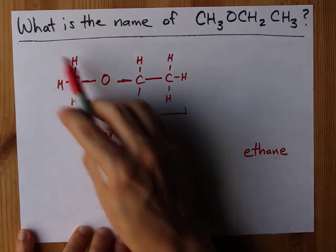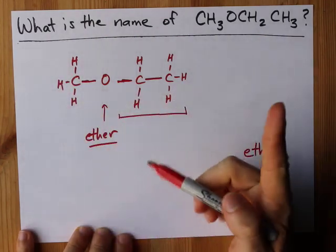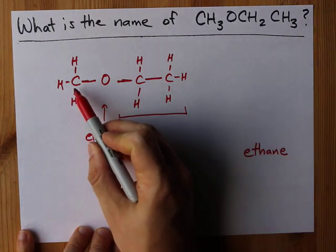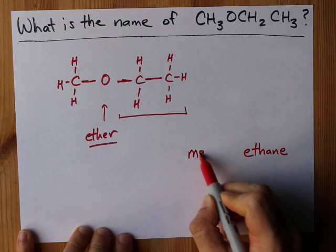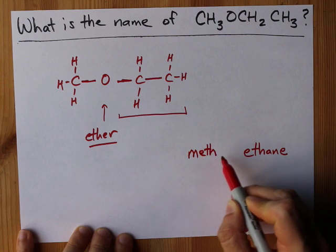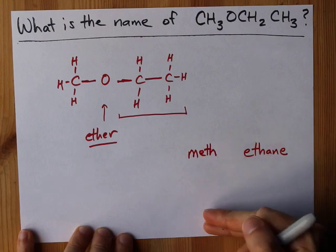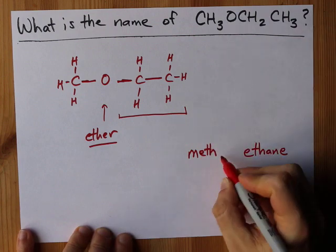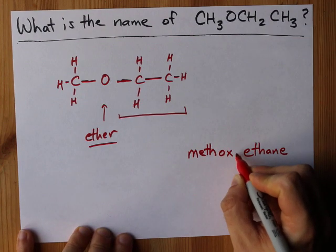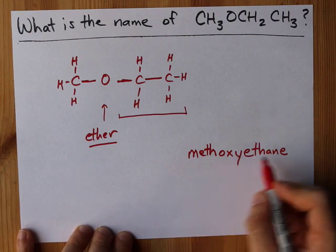And then you have a methyl group, methyl being short for one carbon, and it is connected to the chain via an oxygen. We're going to use the meth from methyl, but instead of YL, meaning that the methyl would have been a substituent, we have to show that it's connected via the oxygen, and so it becomes methoxyethane.